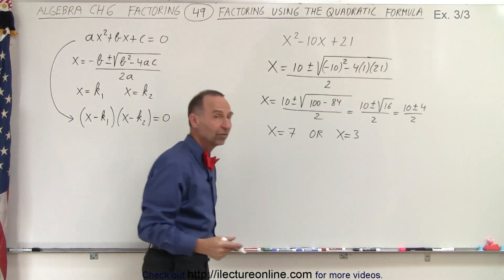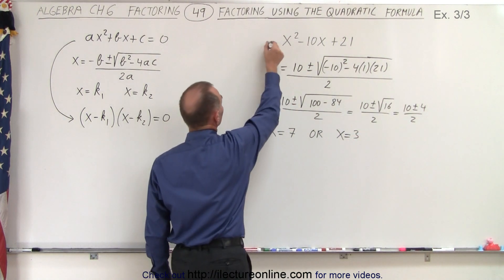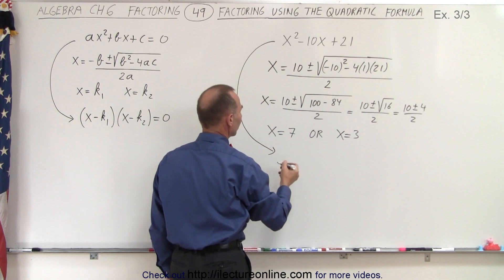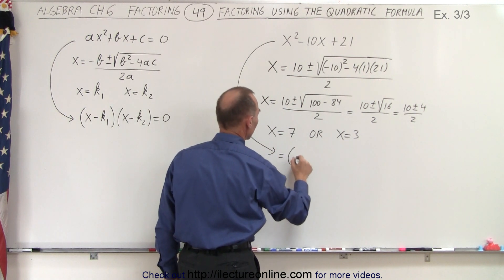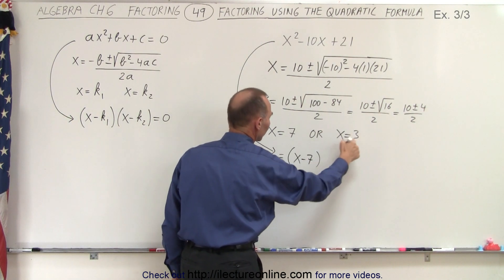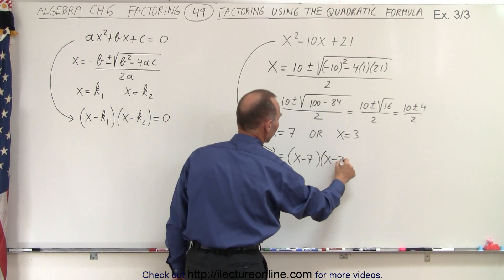x equals 3, which means the original trinomial can be factored to be equal to x minus 7, because we take the opposite signs, times x minus 3.